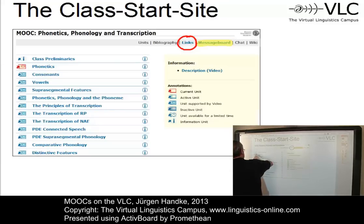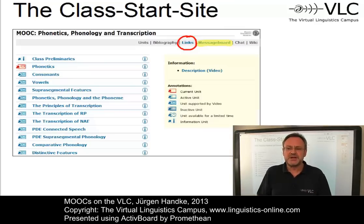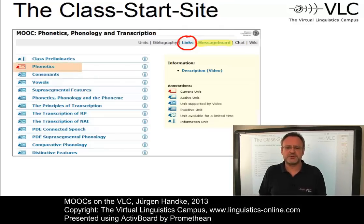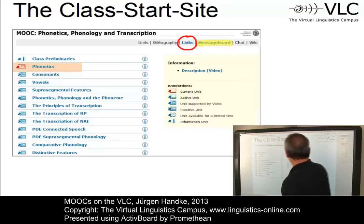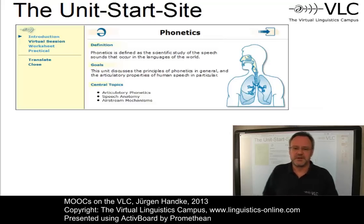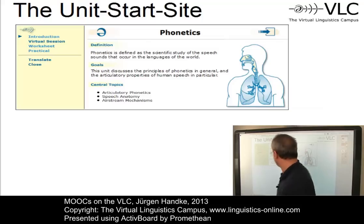So let's assume the unit Phonetics is in focus — it will be marked red. All units are represented by hyperlinks that open their unit start site. Let us illustrate this on the basis of the first unit of the Phonetics, Phonology and Transcription class — the unit Phonetics. Here is the corresponding unit start site. All e-learning units on the Virtual Linguistics Campus have the same structure as far as their unit start site is concerned, and thus have the same navigation menu on the left.